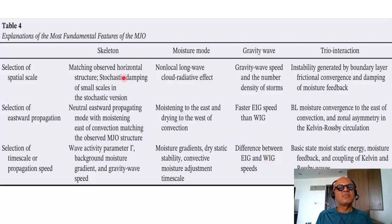Explanations of the most fundamental features of MJO, selection of spatial scale, selection of eastward propagation and selection of time scale or propagation speed. They are different. For example, in skeleton model or theory, matching observed horizontal structure, stochastic damping of small scales in the stochastic version. In the moisture mode, the spatial scale selection happens because of non-local long wave cloud radiative effects. So the planetary scale clouds are created to balance the condensational heating released in the convective part of the MJO at larger planetary scales.